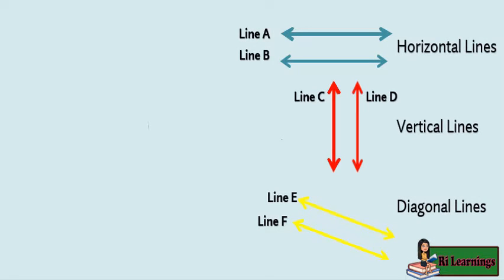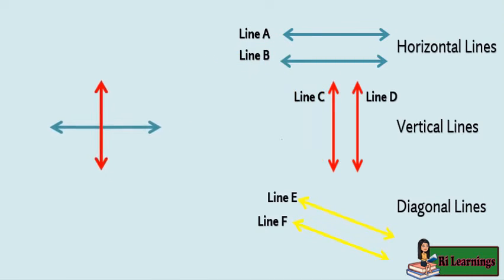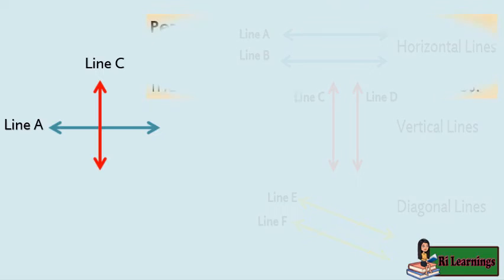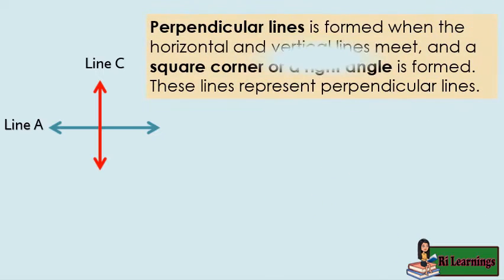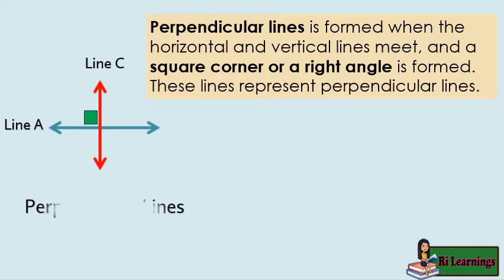Perpendicular lines are formed when horizontal and vertical lines meet, and a square corner or a right angle is formed. These lines represent perpendicular lines.